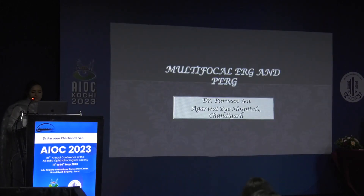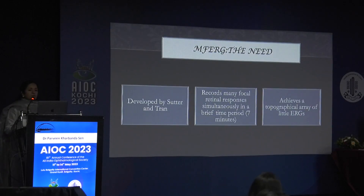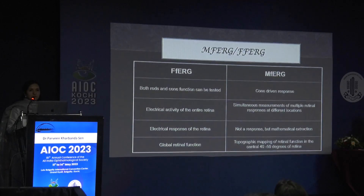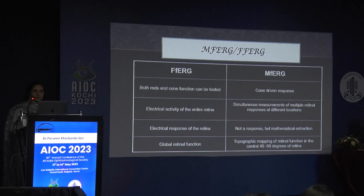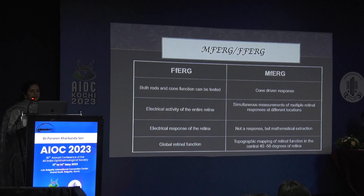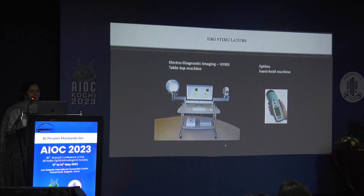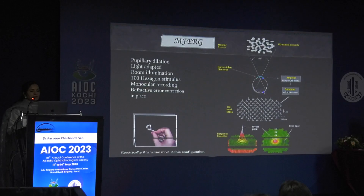Full field ERG gives a global response and does not reveal the function of small retinal areas. Multifocal ERG is largely cone-driven because it is performed in light-adapted conditions and focuses on the central retina. Unlike full field ERG, it is not a true response but a mathematical extraction of responses using a pseudo-random stimulus sequence. The hexagons are smaller centrally and larger peripherally to stimulate equal numbers of cones per hexagon.